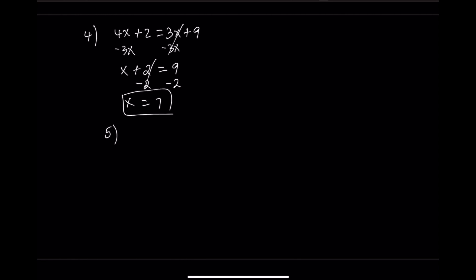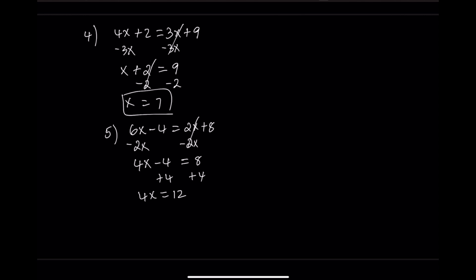Equation 5: 6x minus 4 equals 2x plus 8. Step 1: subtract 2x from both sides — 4x minus 4 equals 8. Step 2: add 4 to both sides — 4x equals 12. Step 3: divide by 4 — x equals 3.